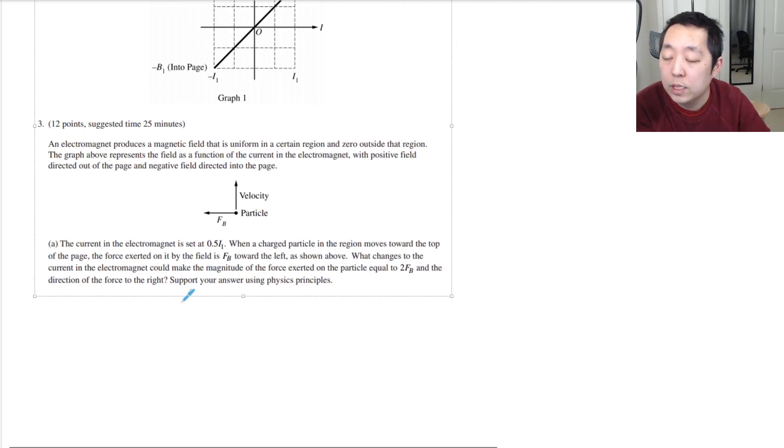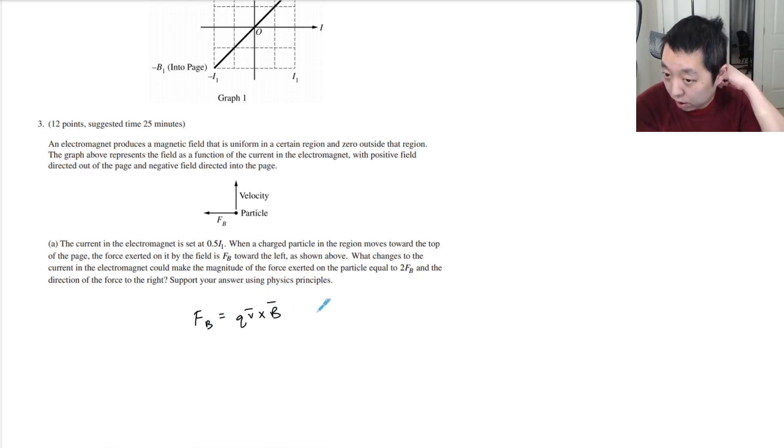The force from a magnetic field is going to be equal to q v cross B, the cross product. Use the right hand rule to establish direction and multiply the magnitudes. If you want to double this force and leave the same charge and velocity alone, the only thing you can do is change the magnetic field.